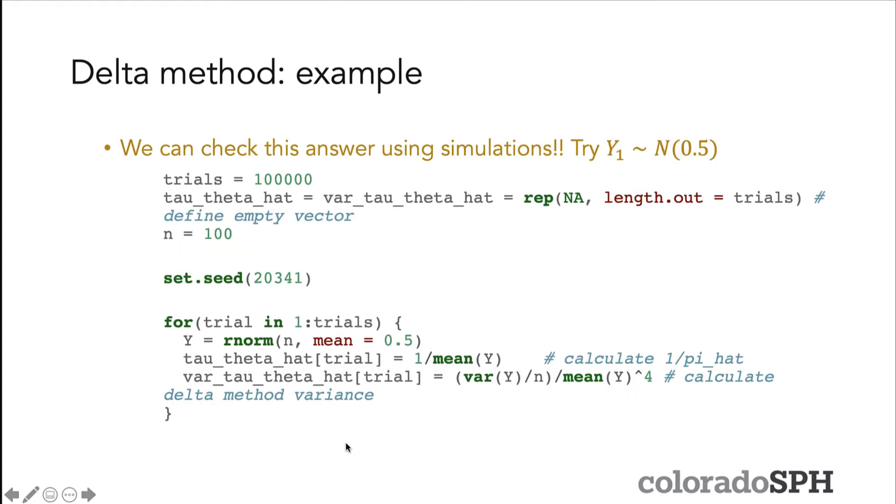We can check that this answer actually works out using simulations. Our Y's are coming from a normal distribution with mean 0.5 and variance 1. We'll do this 100,000 times, and I'm going to store the result of each time I do this in a vector, what I call τ(θ̂), to represent that we're looking at calculating the transformation τ(Ȳ). For each of those trials, I'm going to have a sample size of n equals 100.